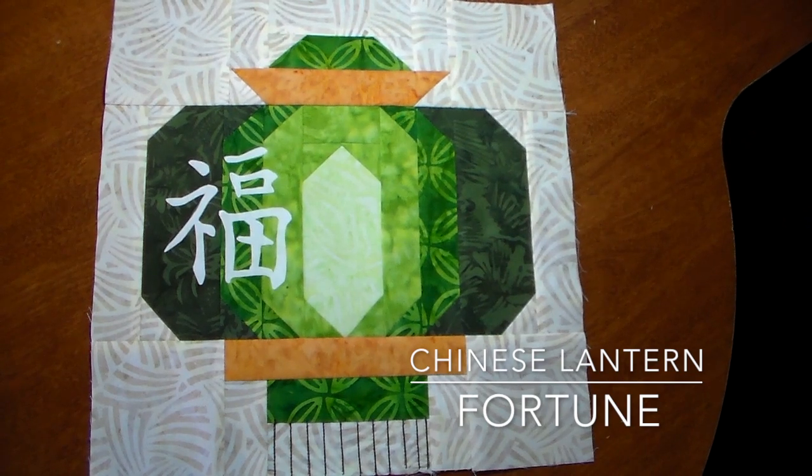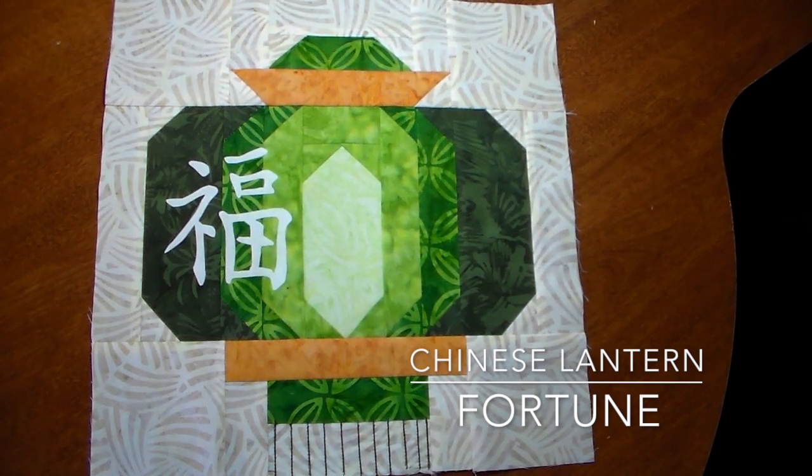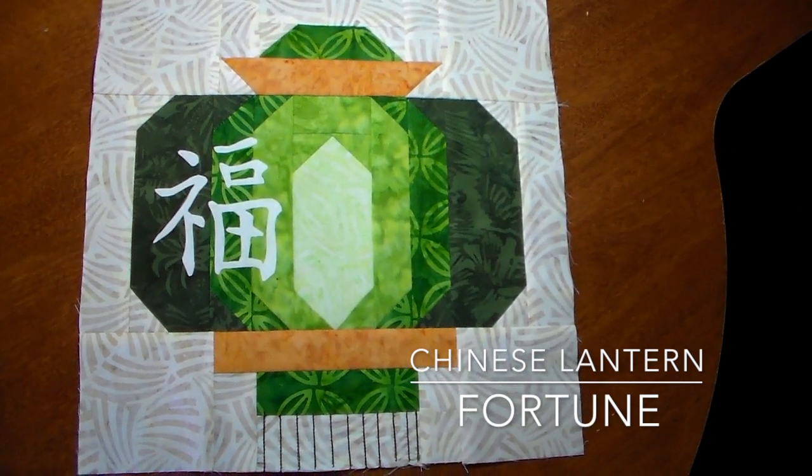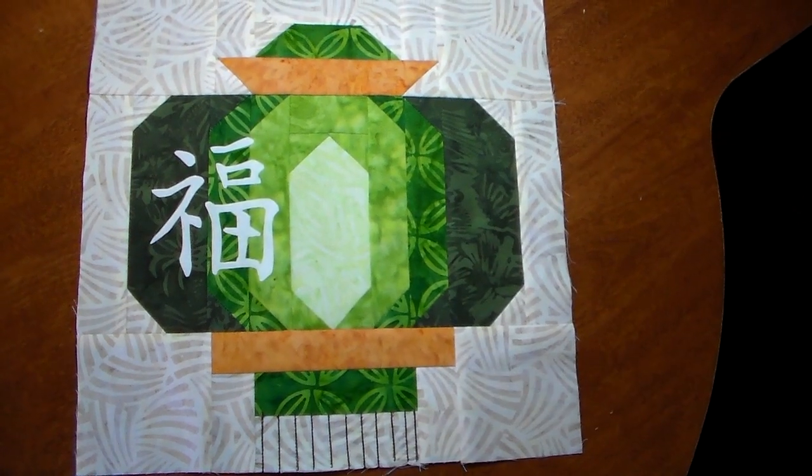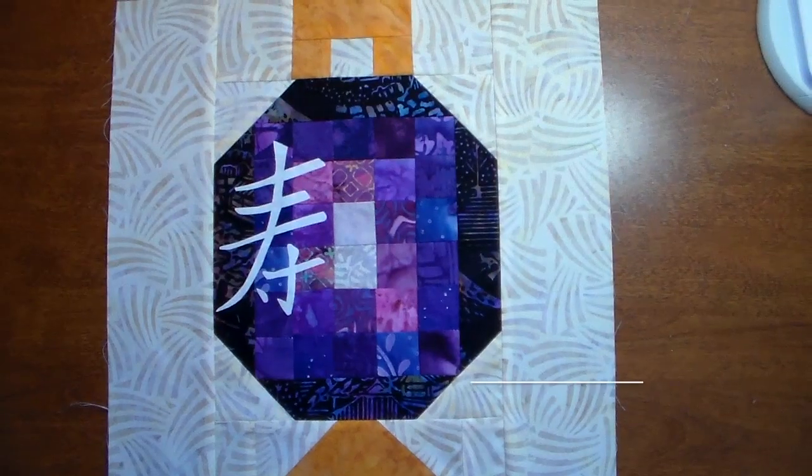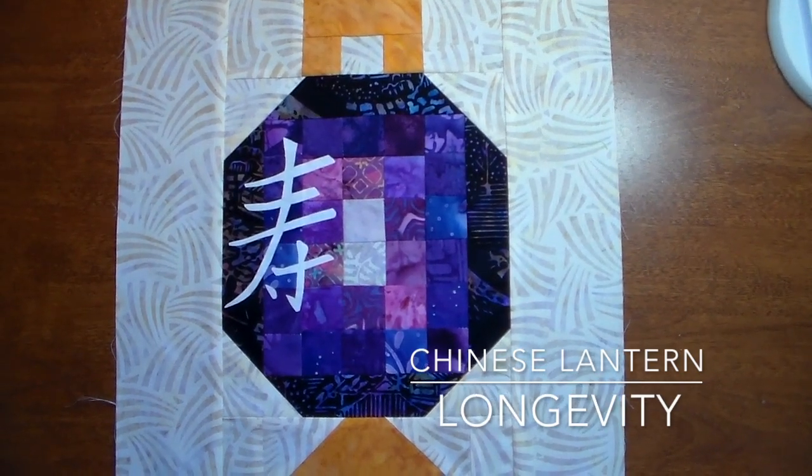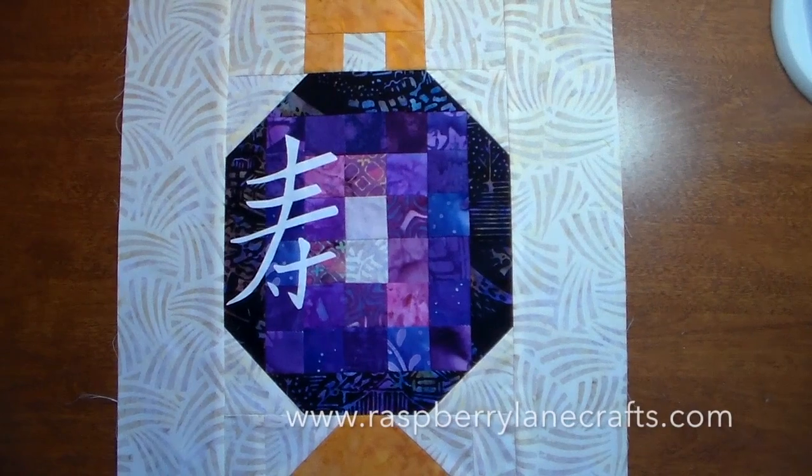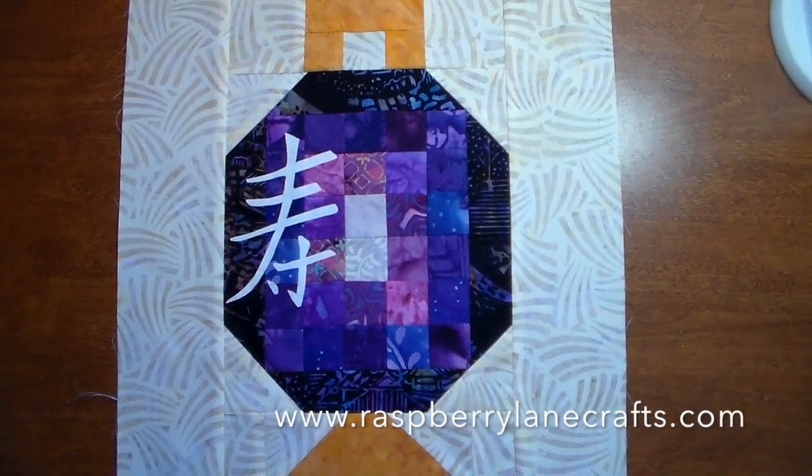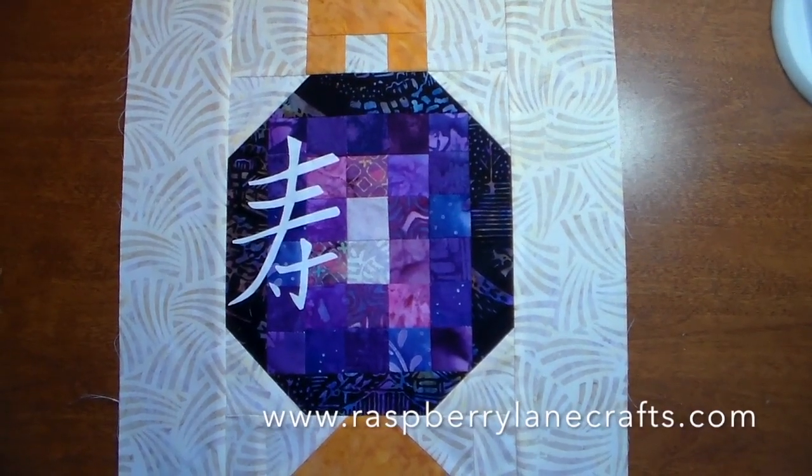This is the Chinese lantern fortune with the fringe on the bottom. And here is another block in the Chinese lantern collection, this is Chinese lantern longevity. The pattern is available at raspberryleancrafts.com.